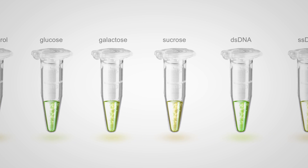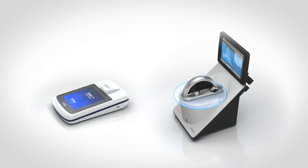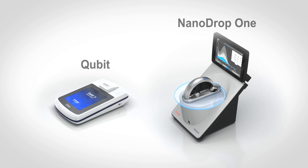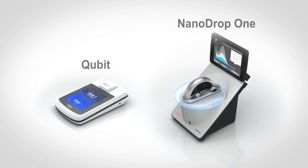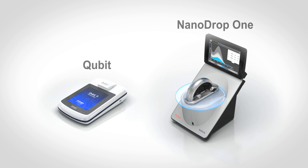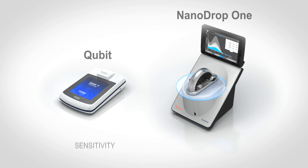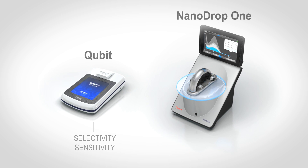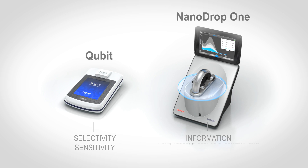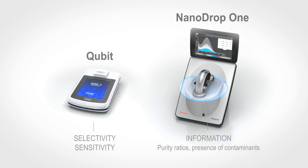Every lab should have the best of both worlds. The Qubit and NanoDrop One instruments enable accurate, easy, and fast quantitation of biomolecules. The Qubit fluorometer offers specificity, whereas the NanoDrop One instrument offers information about the sample, such as purity ratios and the presence of contaminants.